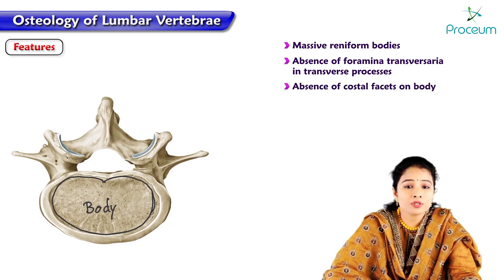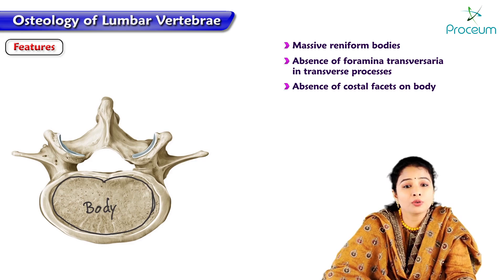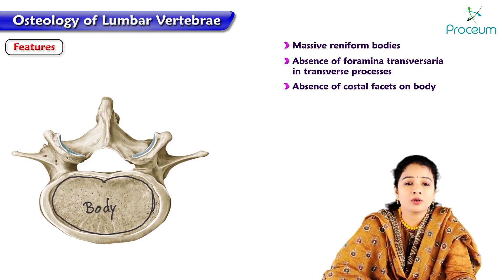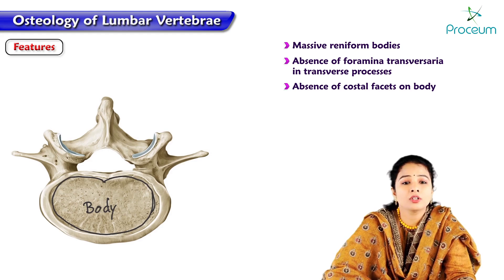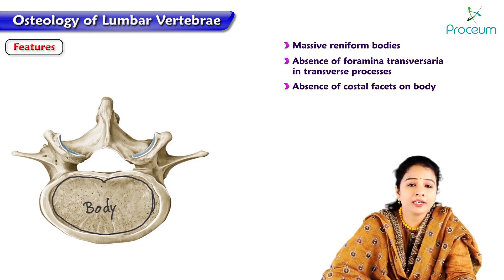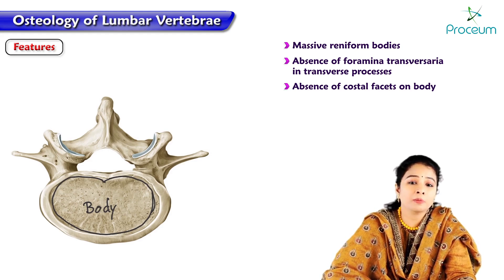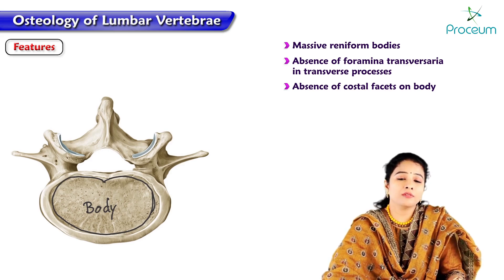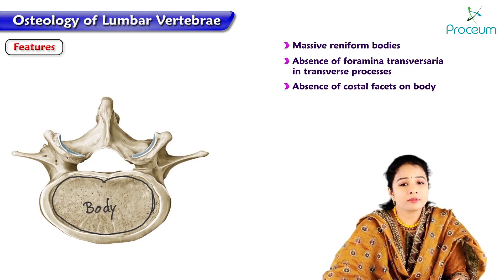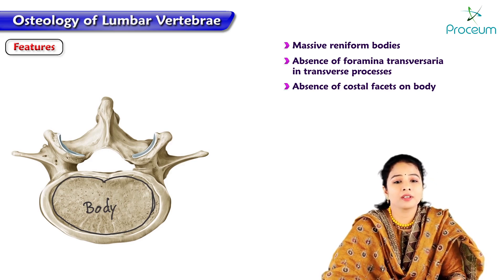Another feature is the absence of costal facets on the body. This is how we differentiate lumbar from thoracic vertebrae. Thoracic vertebrae are mainly identified by the presence of costal facets on the body, and these costal facets are absent in lumbar vertebrae.